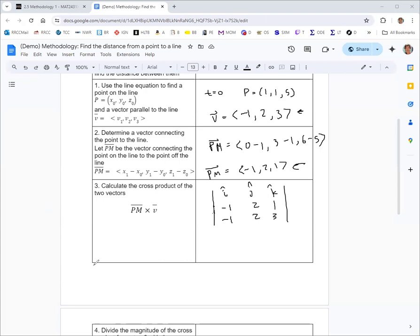This is still a little new for some folks, so we'll rehash quickly how to do this. We look at the vector i times its 2 by 2 minor. So 2, 1, 2, 3, times i, and then minus, and then we do that for j. The 2 by 2 minor there: -1, 1, -1, 3. And then for k, it'd be -1, 2, -1, 2.